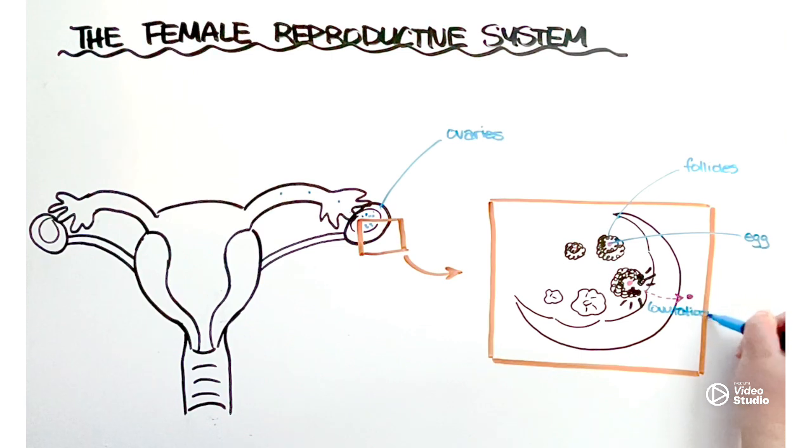When that egg is mature the follicles will actually rupture. The egg will then push against the membrane of the ovaries and then burst out of the ovaries into the next structure, the fallopian tubes. And again it's at that point where it could potentially meet a sperm cell.